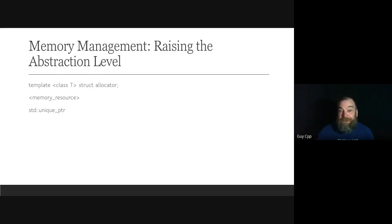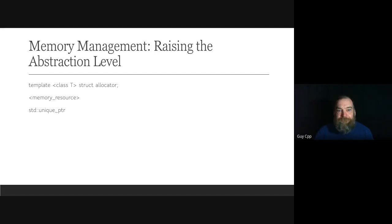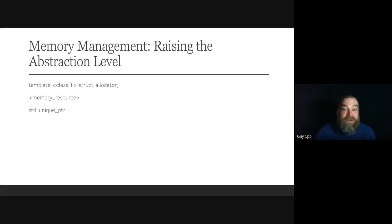The next item is unique_ptr — this should be your default class for creating anything with dynamic storage duration. Recall that new returns a pointer, and if that pointer is bound to a name and the name falls out of scope, the address space allocated by new leaks. What if, when the pointer fell out of scope, the address space was freed? That's the premise behind unique_ptr — it's simply a pointer with ownership semantics.